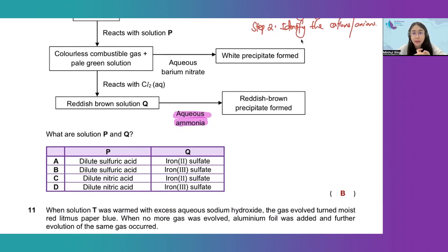So reddish brown precipitate formed tells us that it contains Fe3+ ions. And the reddish brown precipitate will be Fe(OH)3.